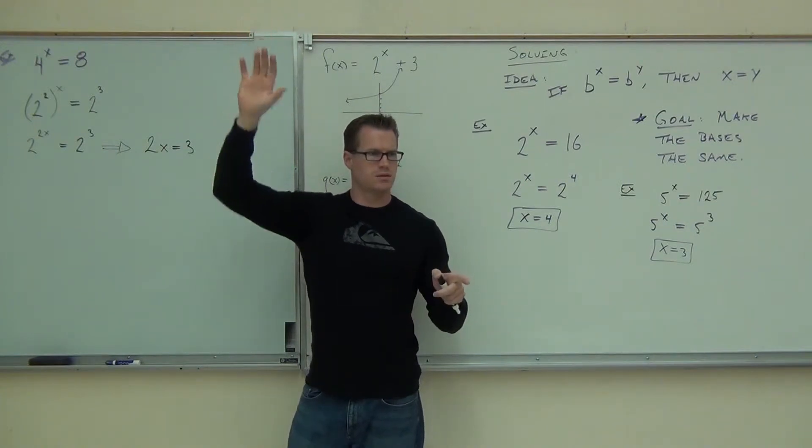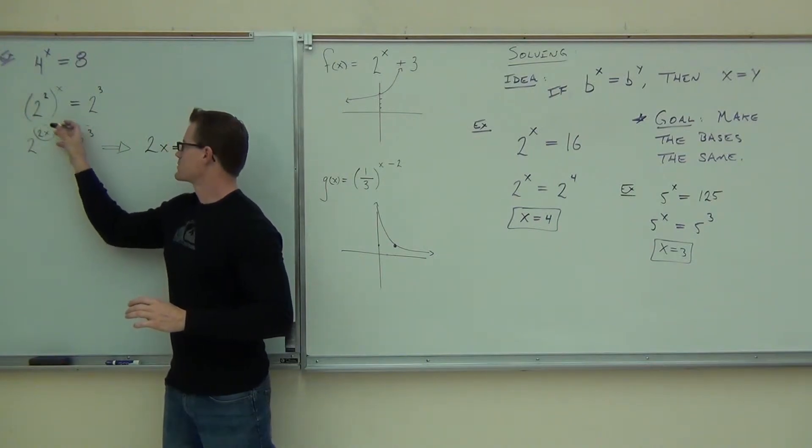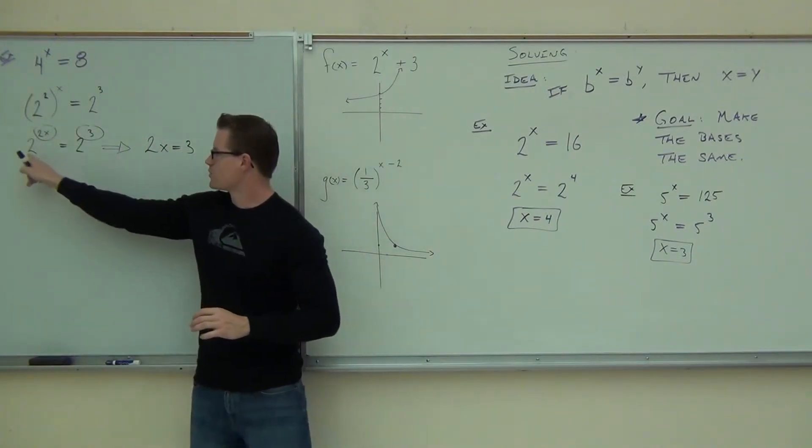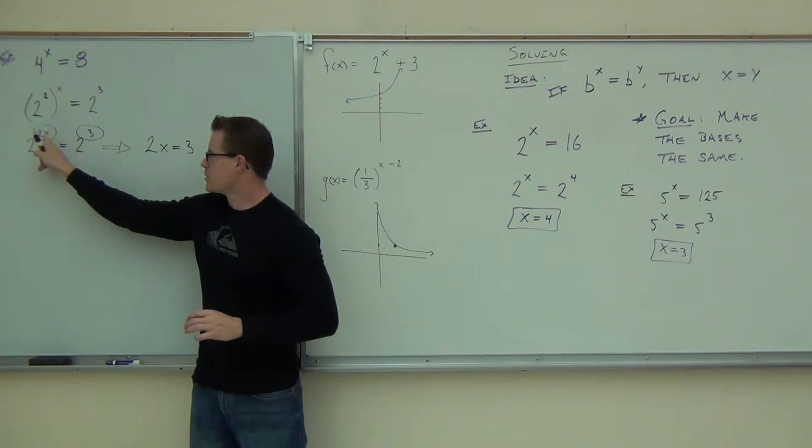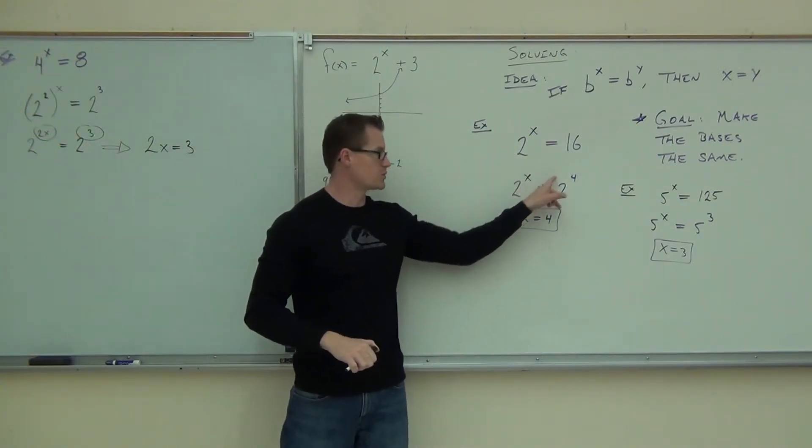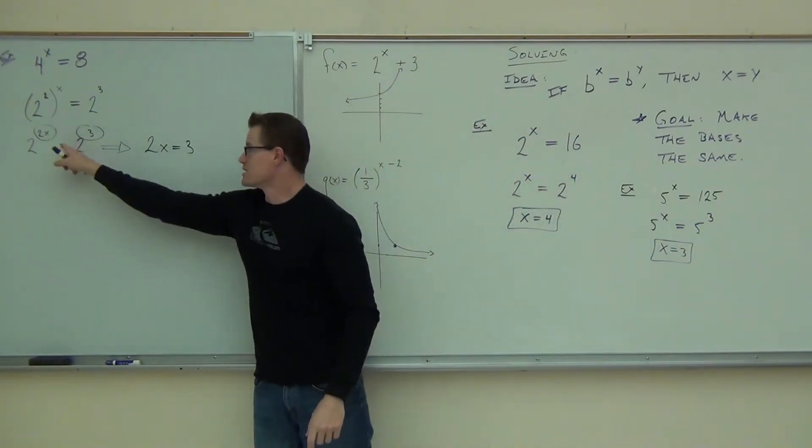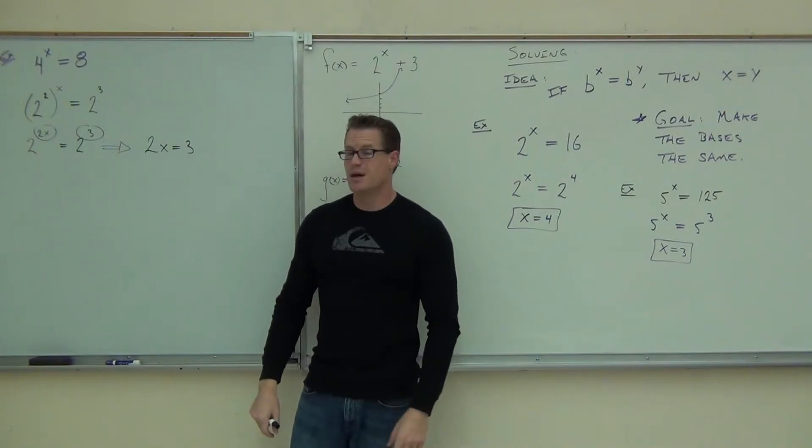Would you raise your hand if you're okay on that problem so far? Yes? How 2x is equal to 3? Well, this is my exponent, right? And that's my exponent. You know if your bases are the same, your exponents must also be the same. It's got to be there. Just like over here, x was equal to 4, x was equal to 3, 2x is equal to 3 in this case. Now, are you done?